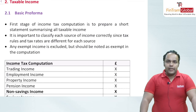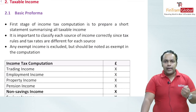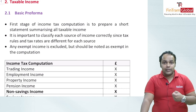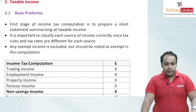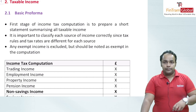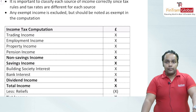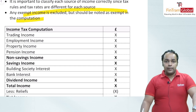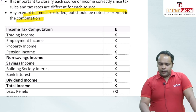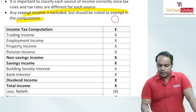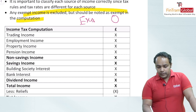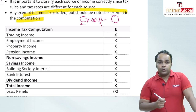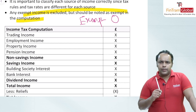Moving to taxable income — it is very important to understand the basic pro forma of a tax computation. Each source of income is computed differently and taxed at different tax rates with different thresholds. It is important that you know how to consolidate everything in one place. Any exempt income is also excluded, and the examiner wants it noted as exempt in the computation — shown as zero — so the examiner knows you recognise it as exempt.